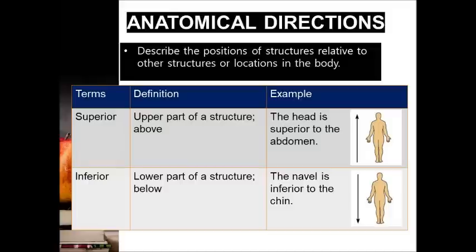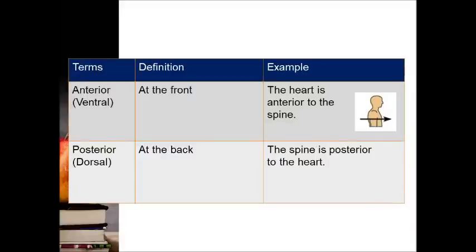Let's look at this table. Any structure that is located above is called superior, while located below is called inferior. Please read the examples in the table. The next term is anterior, which means at the front. For example, your heart is anterior to the spine.